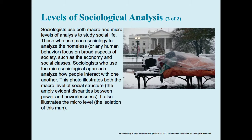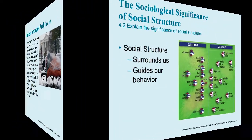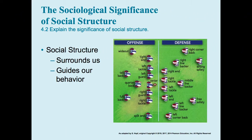Although almost all researchers will use one or the other as the basis for their research, studying the social structure lends itself to the macro perspective. Social structure refers to the typical patterns of groups, how individuals react within those groups, and how the groups operate amongst themselves. Unless we live in total isolation, the social structure is all around us — and even if you did live in isolation at some point, the experiences you had in society also form the basis of your beliefs.